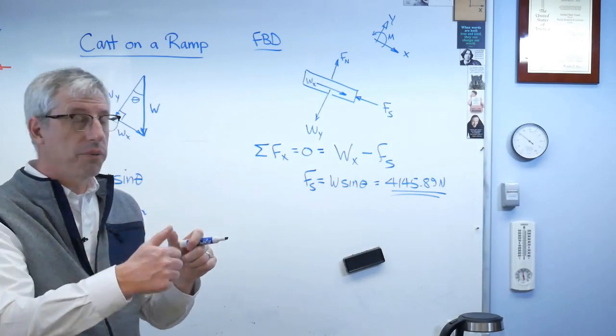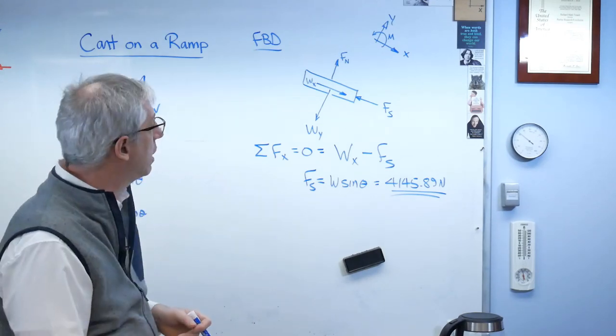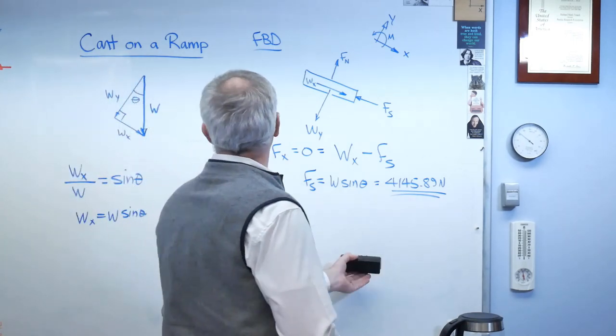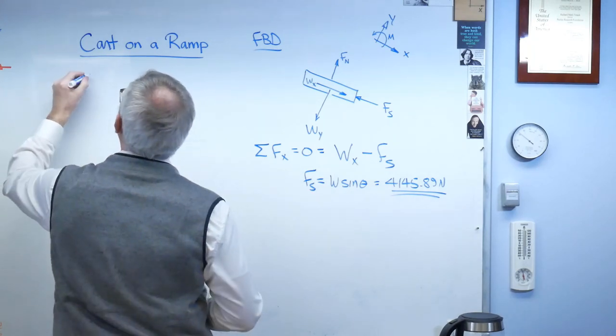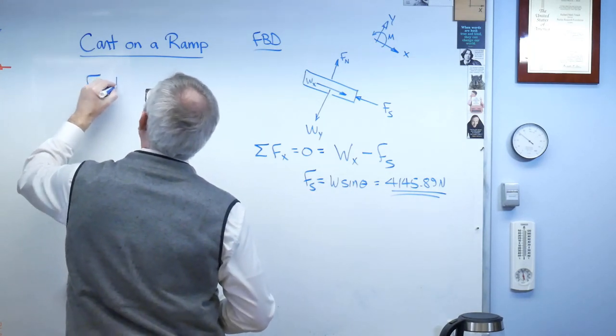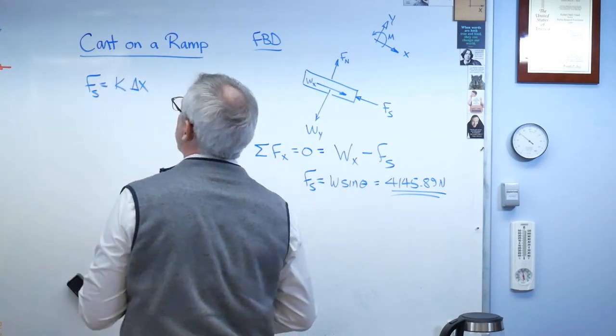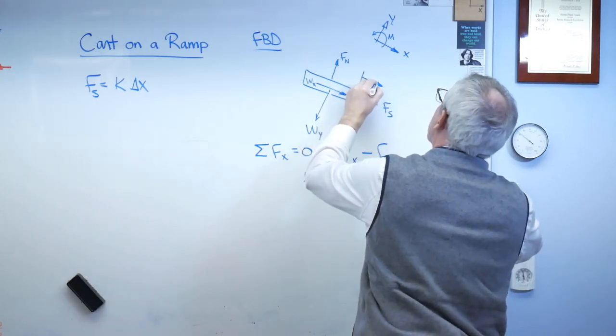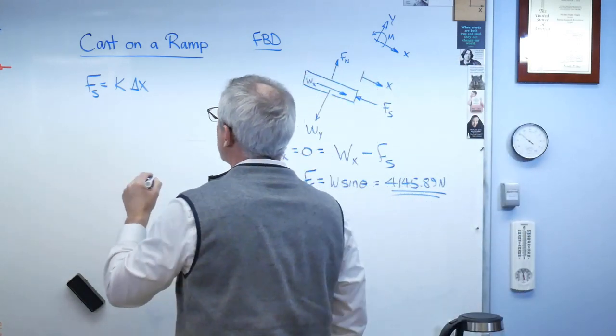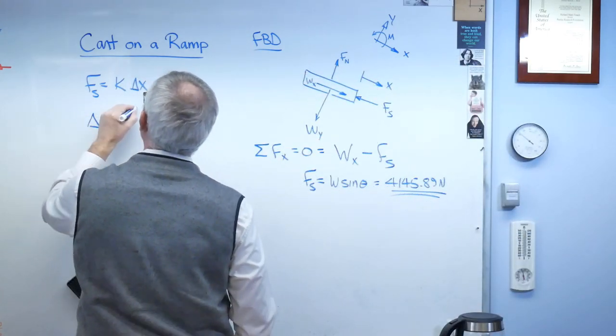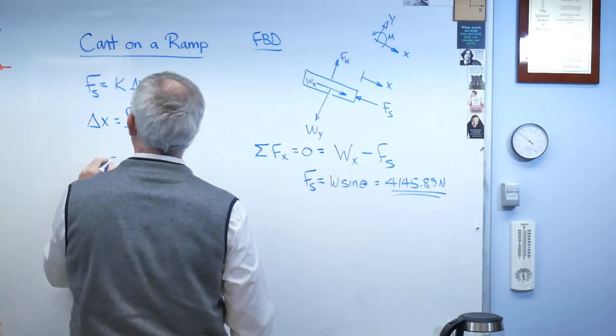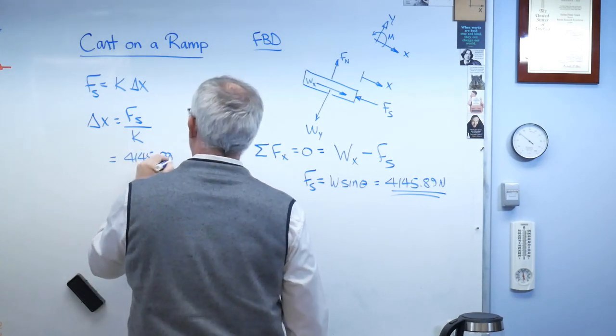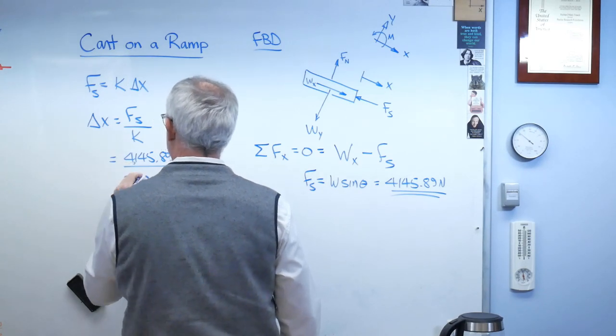Now we know the force down the ramp. That's the first part. But we don't know how far the spring has compressed. For that one, we need the spring equation, f equals k delta x. The force on the spring generated by the spring is k times delta x, where delta x is how far the spring is compressed. So I'm trying to find delta x. That's going to be the spring force over k. And that's going to be 4145.89 newtons.